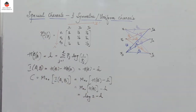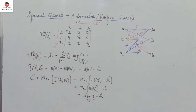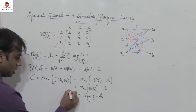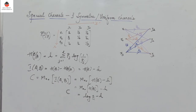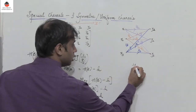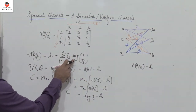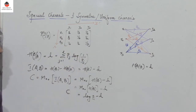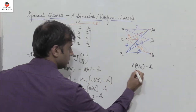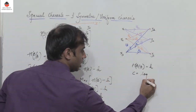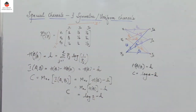The entropy of the output symbols h of b is maximum if and only if all received symbols become equiprobable. Since there are s number of output symbols, the maximum value is log s to base 2. So the channel capacity c equals log s minus h. These are the two key formulas: h of b given a equals h (the row entropy), and c equals log s minus h.